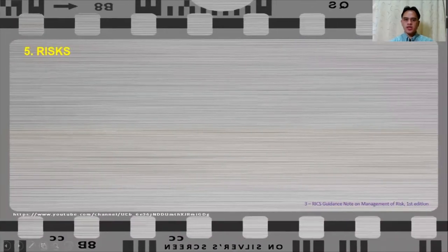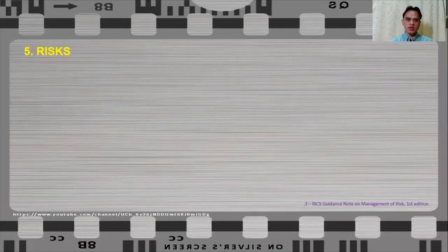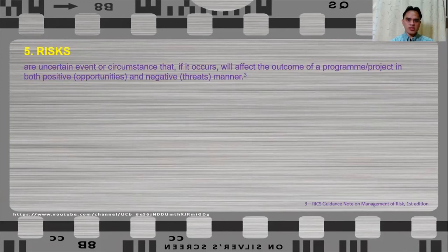Before we proceed with the selection of procurement route, let us talk a little bit more about risks. Risks are uncertain event or circumstance that, if it occurs, will affect the outcome of a program or project in both positive and negative manner. So, you see, risks are not all threats. There are also opportunities in risk if you explore the risk properly.